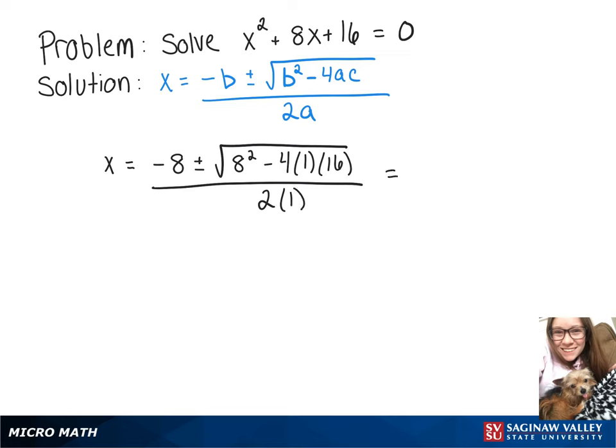That turns into negative 8 plus or minus the square root of 8 squared is 64 minus 4 times 1 times 16 is also 64 over 2.